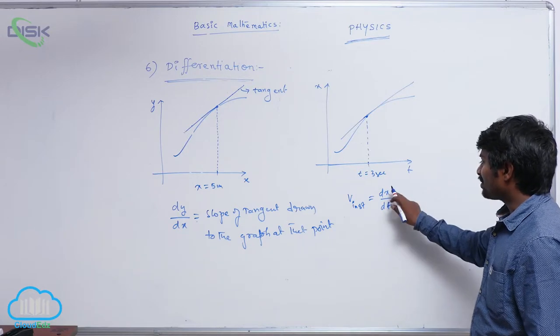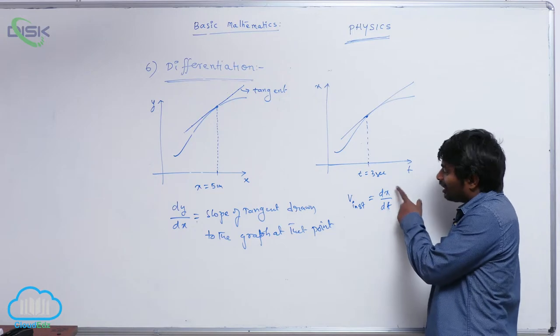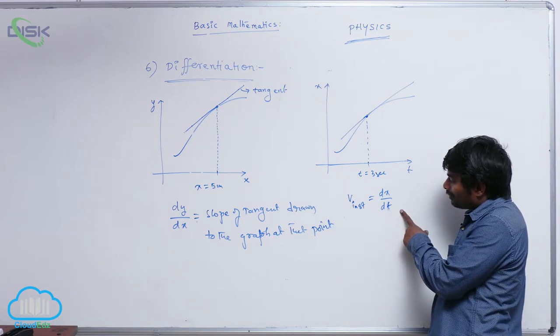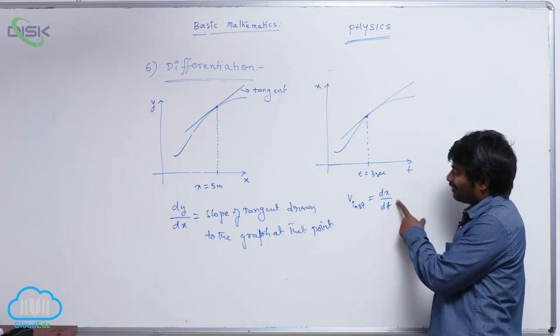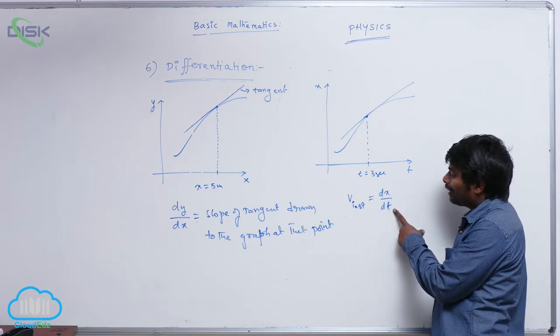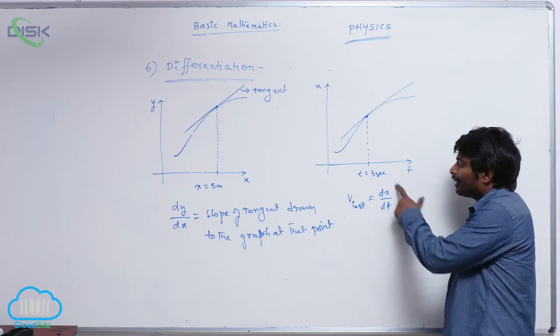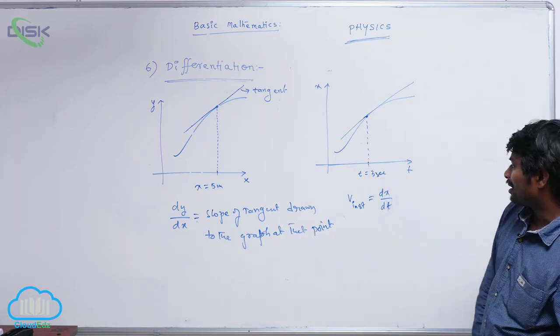So v instantaneous is equal to dx by dt. Rate of change of displacement or differentiation of x with respect to time or instantaneous velocity we call it as.